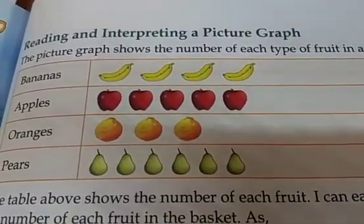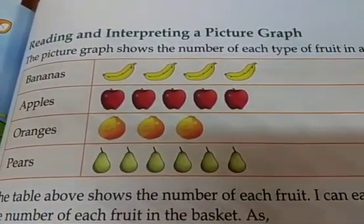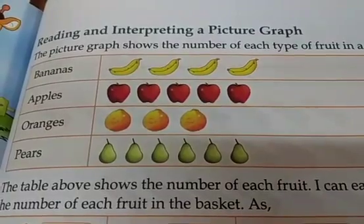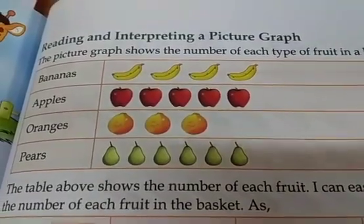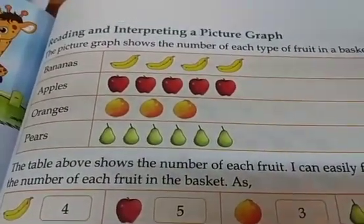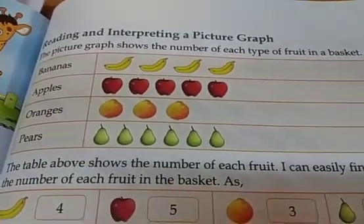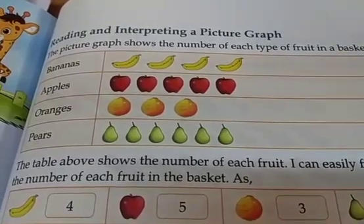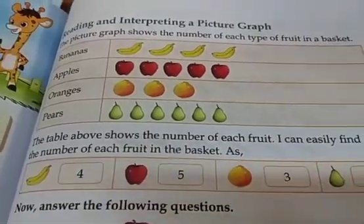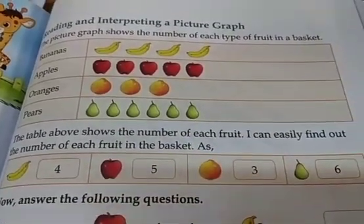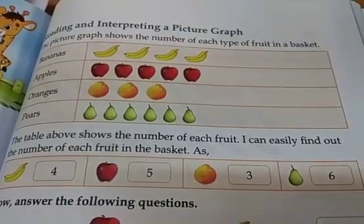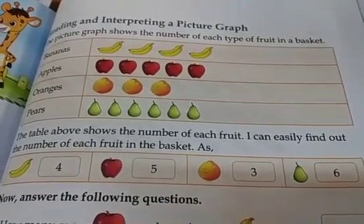Now you can see here bananas, apples, oranges, and peeps. The table above shows the number of each fruit. I can easily find out the number of each fruit in the basket: 4 bananas, 5 apples, 3 oranges, and 6 peeps.